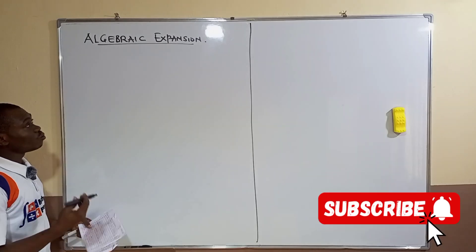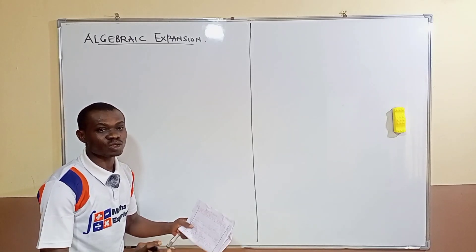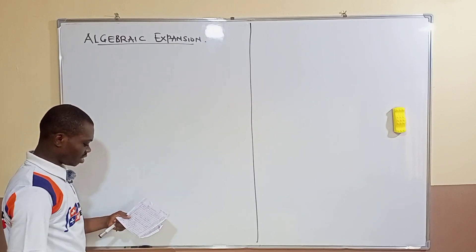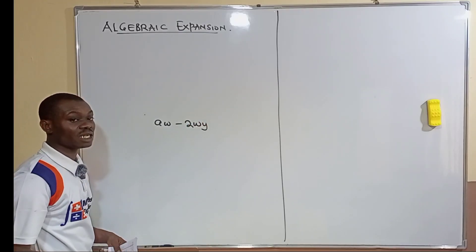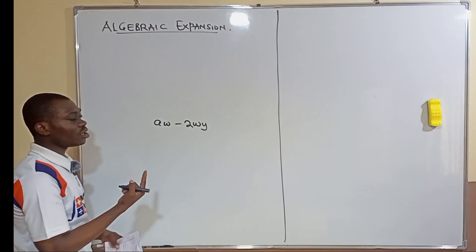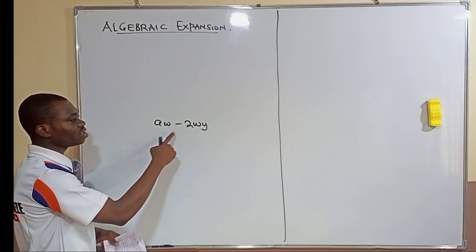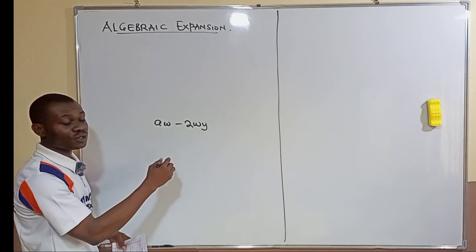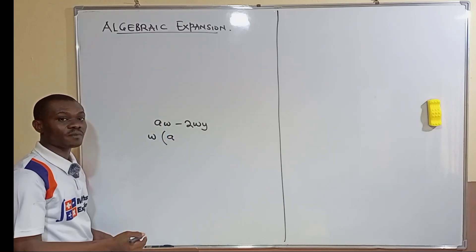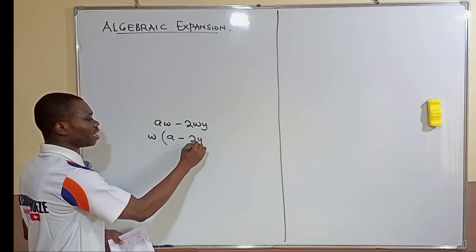We said that factorization has to do with resolving an algebraic expression into a product of its factors. For example, with an expression like 2wy, what we do is bring out the common factor of the monomials involved. You have w in both terms, so you bring it out. Dividing gives you a, then you bring down the sign, and dividing the second term gives you 2y.